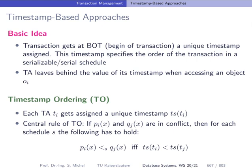Instead of using two-phase locking, we can also use timestamp-based approaches to achieve conflict serializable schedules. Assume we have a transaction TI coming into the system, and at arrival this transaction gets assigned a timestamp, let's say 10.